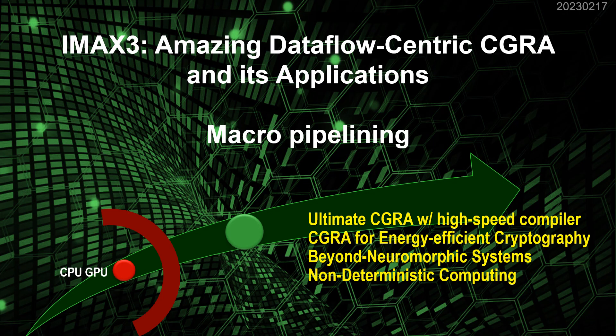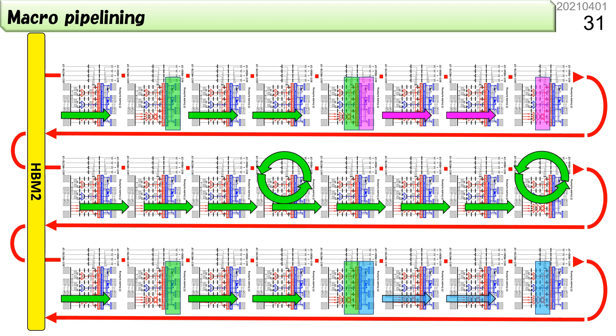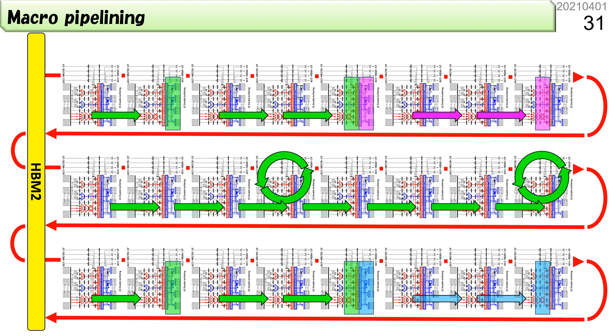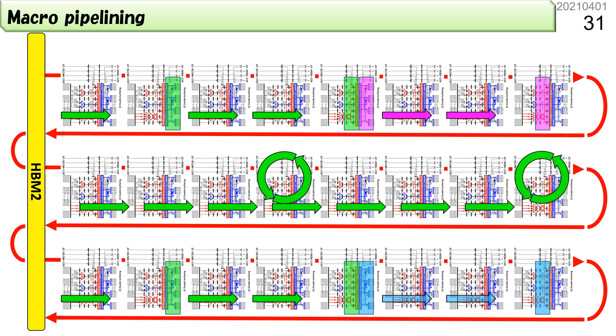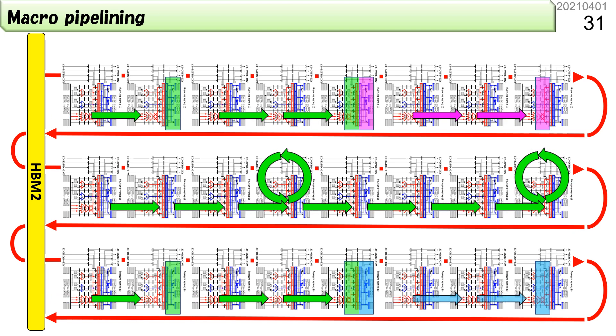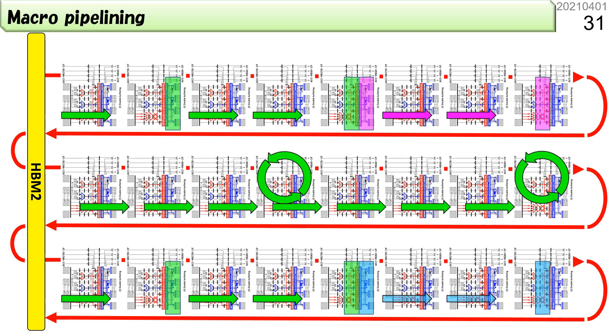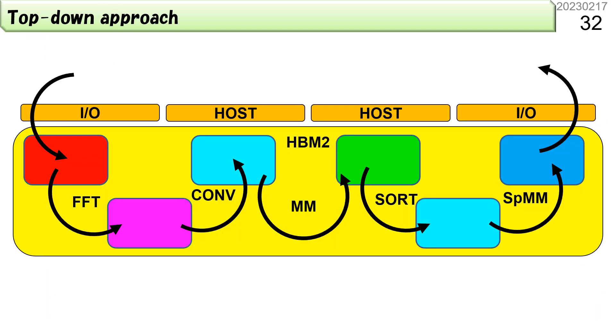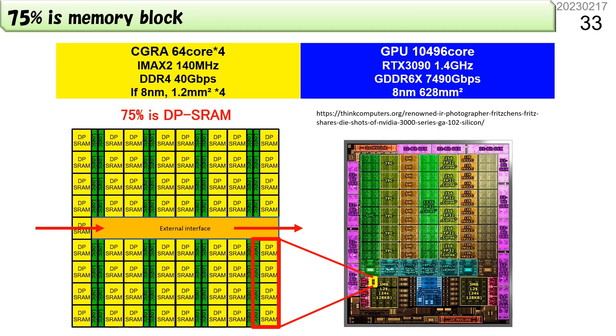The last one is macro pipelining for concatenating different pipelines. The multiple medium pipelines can be concatenated through HBM2 in this way. This configuration combines micro, medium, and macro pipelining. Let's assume various data are located in the main memory and processed in a pipelined manner. To avoid the interference of multiple data flow in the main memory, the intermediate data should be stored in the space out of the main memory. IMAX3 can build pipelines outside the main memory. 75% of IMAX3 is memory block. The size of IMAX will be quite smaller than GPU.